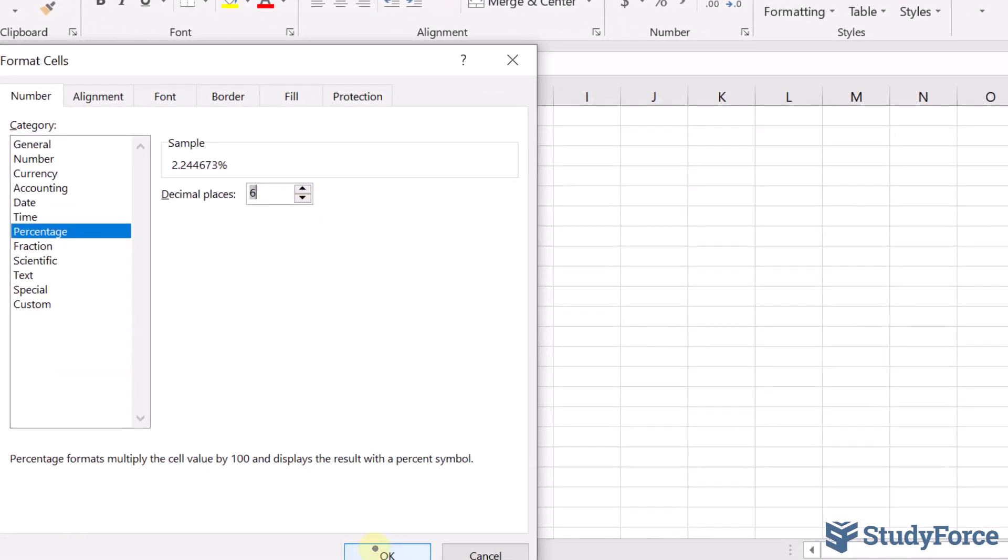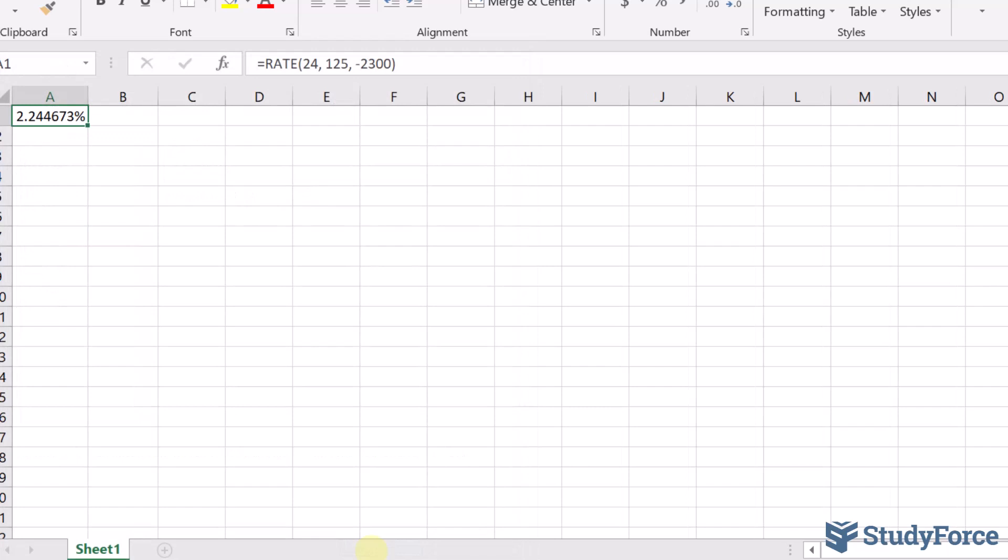You need at least six for accuracy's sake. So it's 2.244673%, and that's the percentage per period. Let's go ahead and write it down.